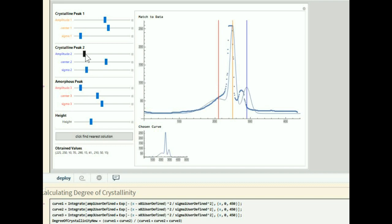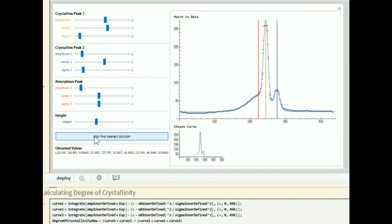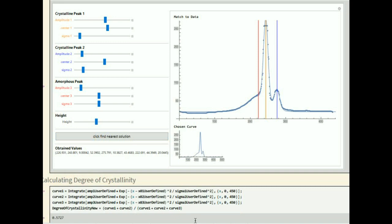Once you think you have a fit that's fairly reasonable, you can click find near solution. And Mathematica is going to help you find the best fit for this data. Then using these Mathematica found values, you can calculate degree of crystallinity for the curve.